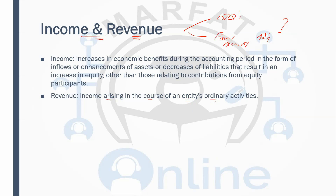If I am receiving commissions and acting as an agent but that is not my ordinary activity, that cannot be classified as revenue. So in the exam, there may be an adjustment where they tell you that proceeds from the sale of a non-current asset, an agency fee, or commissions have been included in revenue. You have to reverse it from revenue and record that as income rather than revenue.